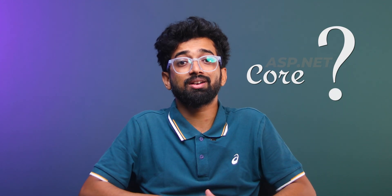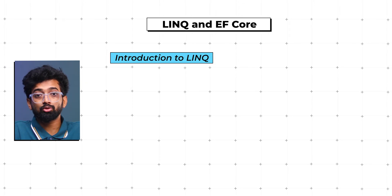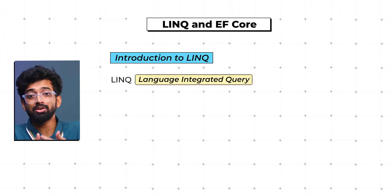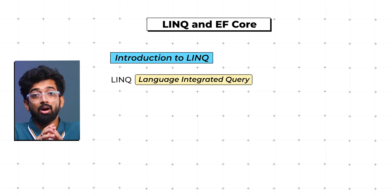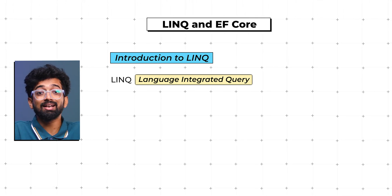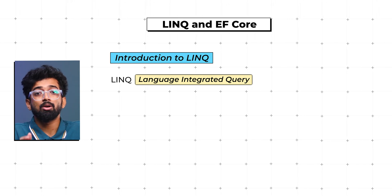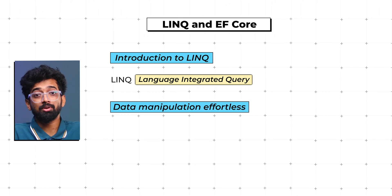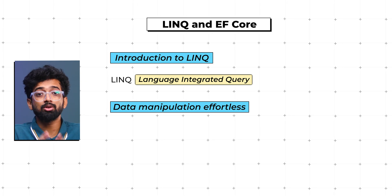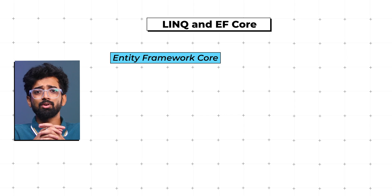Next up we have LINQ and EF Core. LINQ — Language Integrated Query — is a powerful feature in C# that lets you query collections and databases using a consistent syntax. Mastering LINQ will make data manipulation effortless, whether you are filtering, sorting, or joining data.